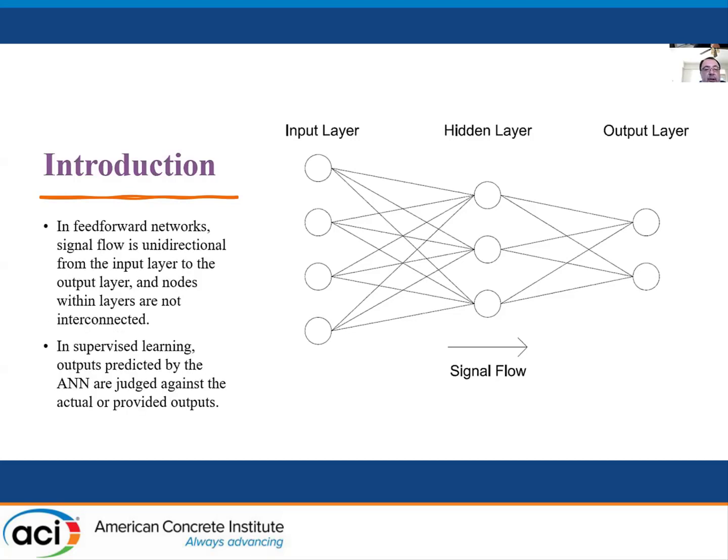In a feed-forward network, we don't have any connections between the hidden layers. So everything is a single flow from the input towards the output layers.